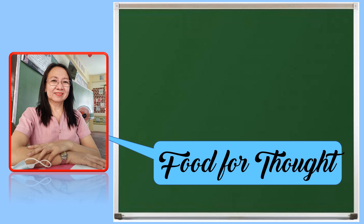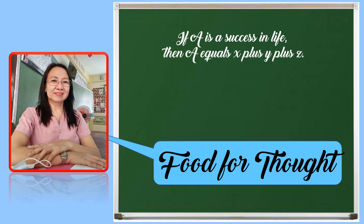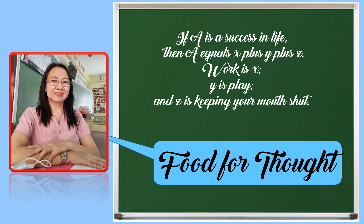For today's food for thought, let me give you this equation. If A is success in life, then A equals x plus y plus z. Work is x. Y is play. And Z is keeping your mouth shut. This is by Albert Einstein. So for a successful life, enjoy your work and avoid too much complaining. Thank you for watching. God bless everyone.